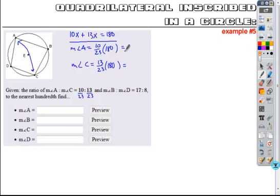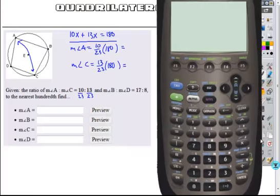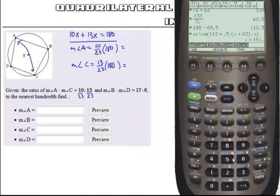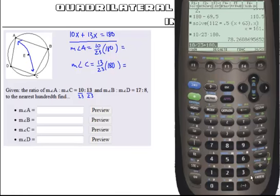And so this is going to give me my solutions. I can go ahead and calculate. So 10 out of 23 times 180, put it in decimal, is 78.26 approximately.